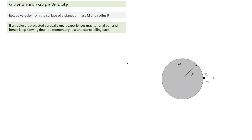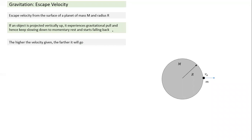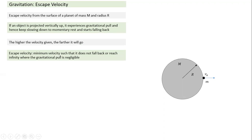This is a small sub-topic called escape velocity, and it's fairly simple to understand. Suppose somebody is on the equator and throws an object vertically up. For him it is vertically up, but from space it appears radially outward. Anything which is radially outward is called vertically up as far as gravity is concerned. So escape velocity is from the surface of a planet of mass M and radius R.